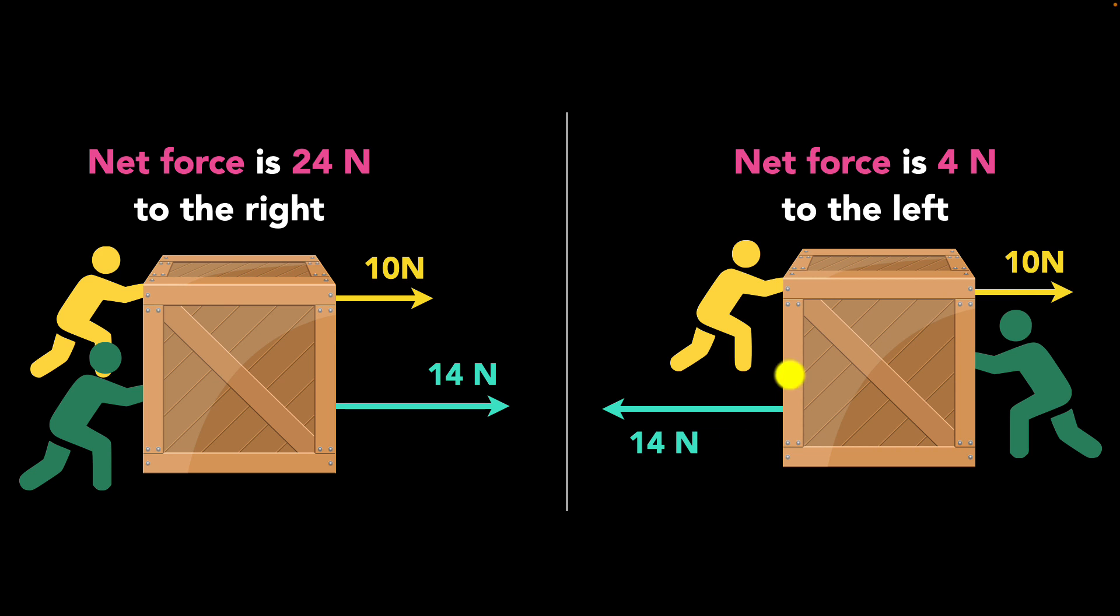What if the two forces had exactly the same strength? If both were 10 newtons? Well, then if you subtract them, you'll get zero. The net force would have been zero. And that makes sense. If two people are pushing the same box in the opposite direction with equal forces, you're not going to expect that box to go anywhere, right? So the net force in that case would be zero.